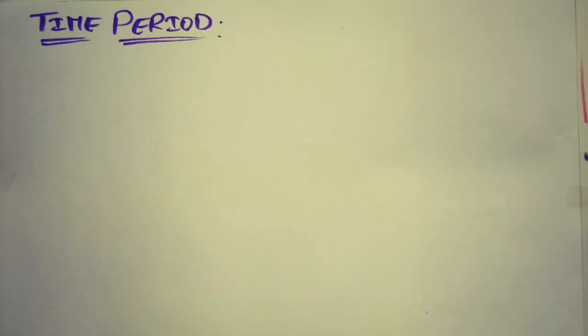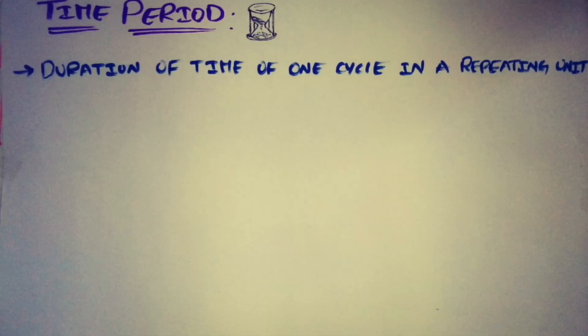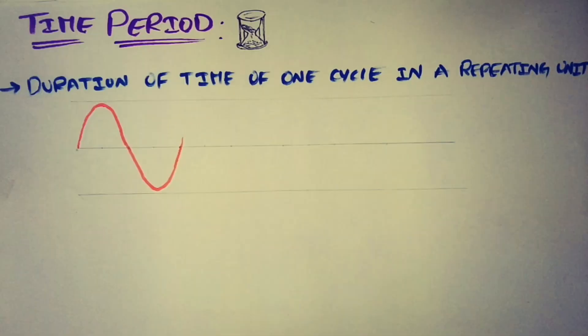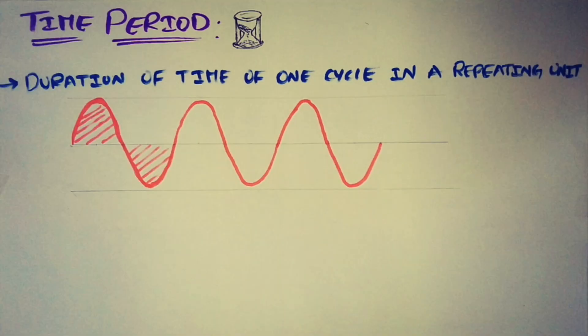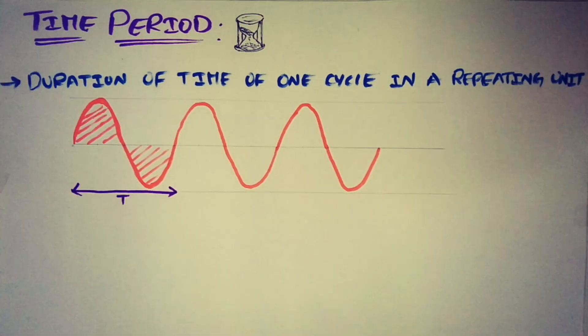Let me begin with the basic topic: time period. It is the duration of time of one cycle in a repeating event. So in a varying sinusoid, the time duration of its one complete cycle is its time period.